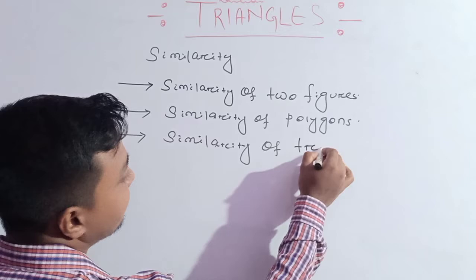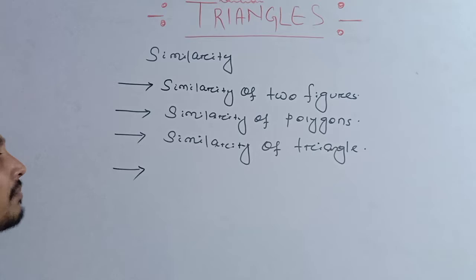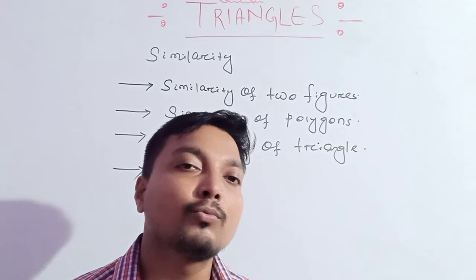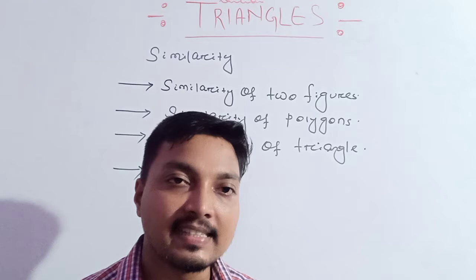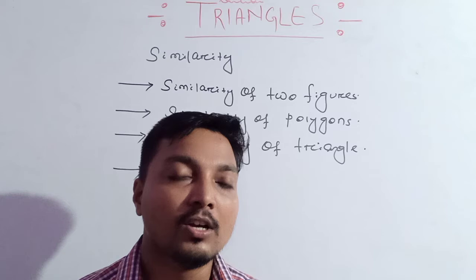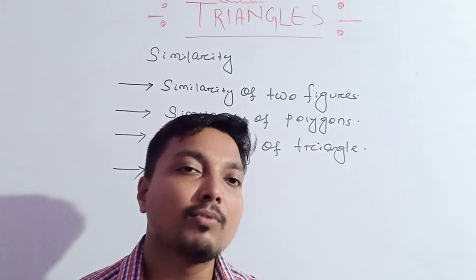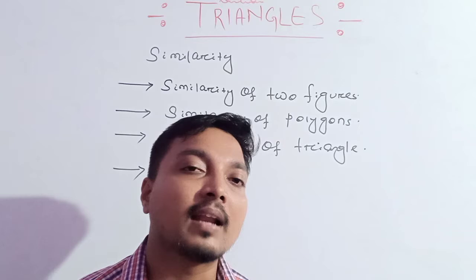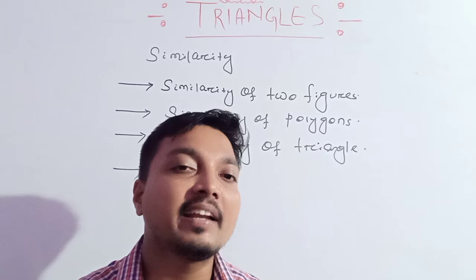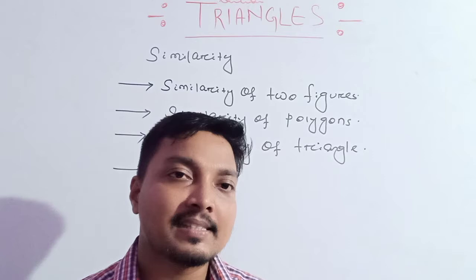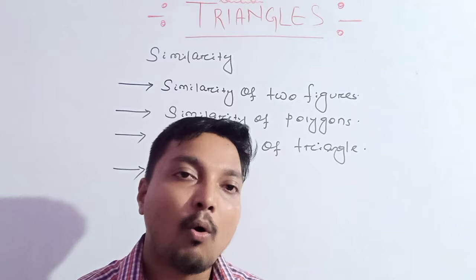Just remember — in our last class it was said that two triangles are congruent whenever all corresponding sides are the same, corresponding angles are the same, and the vertices match one another. Nine criteria are to be followed. But then it was said that a few easy criteria exist by which you can directly say whether the triangles are congruent or not — easy tricks like SSS, SAS, ASA, AAS, and RHS.